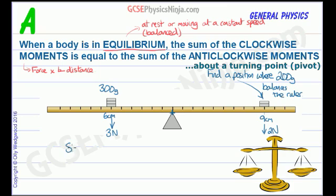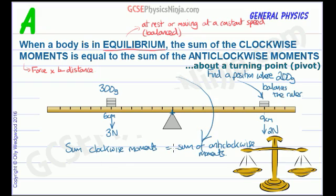That the sum of the clockwise moments equals the sum of the anticlockwise moments. The clockwise moments are going this way. We've got force times distance, so that's 2 newtons multiplied by 9 centimetres.